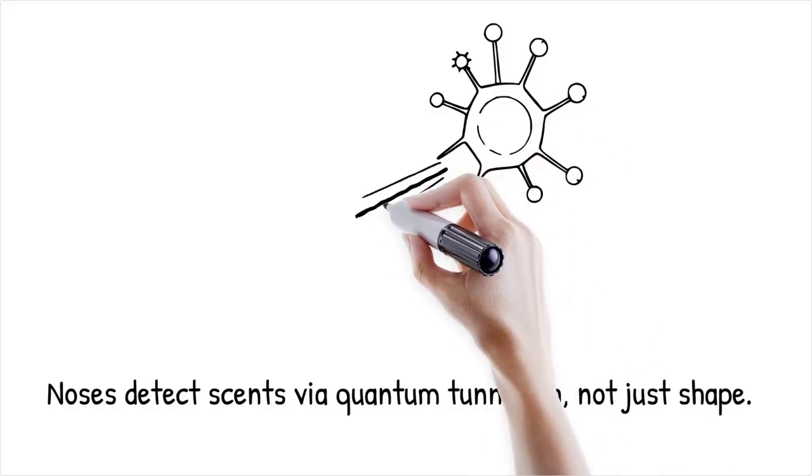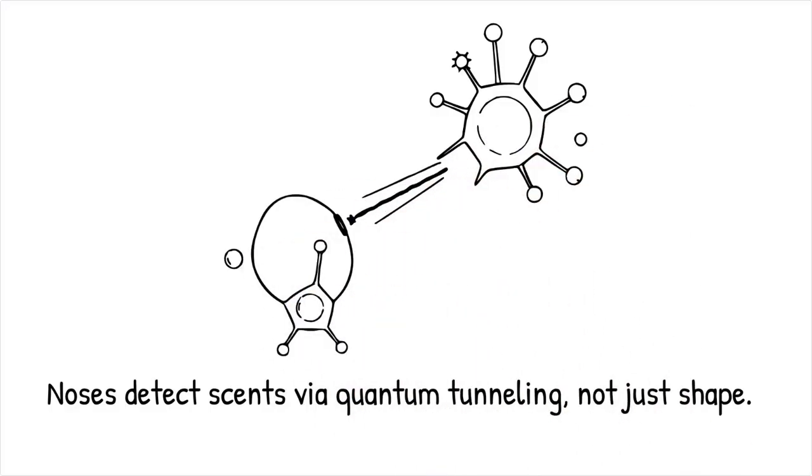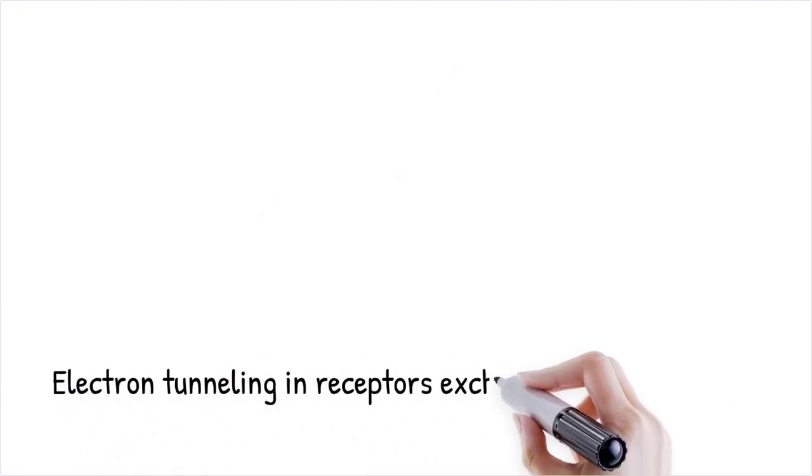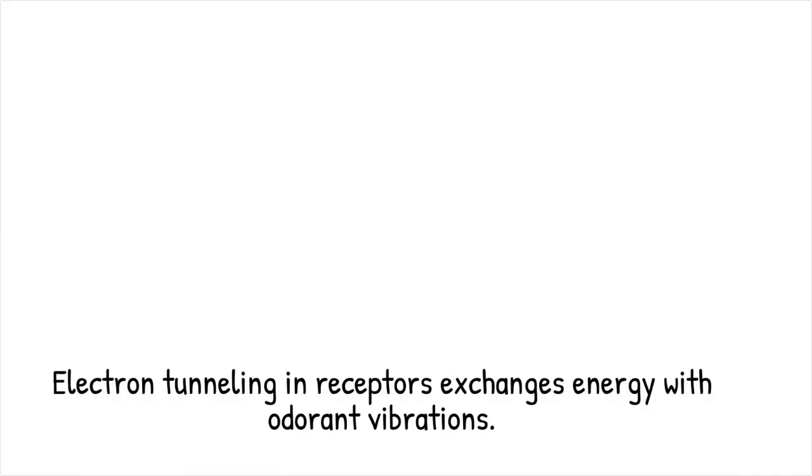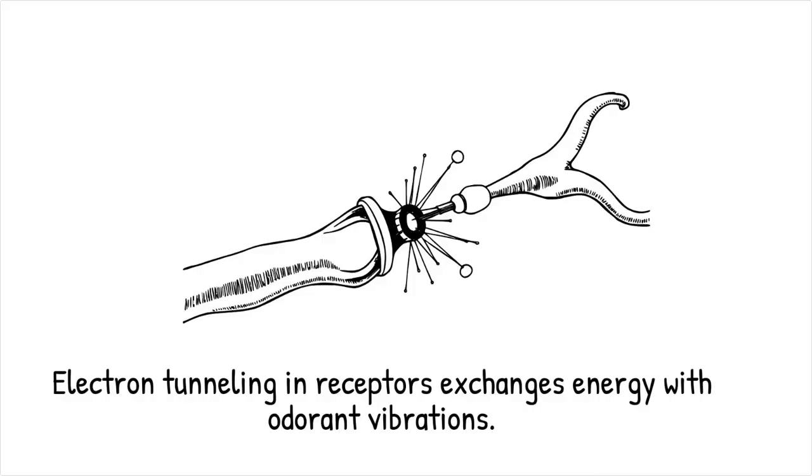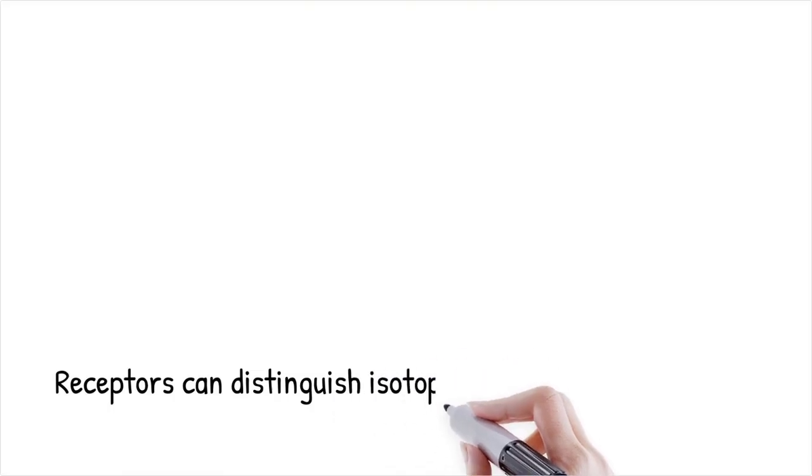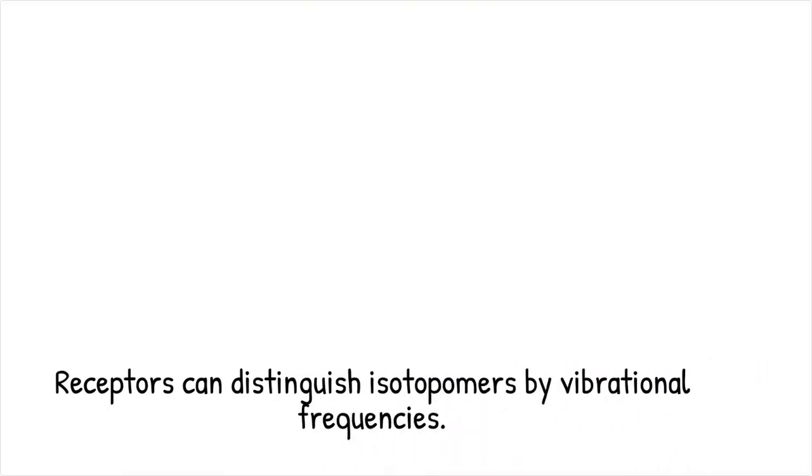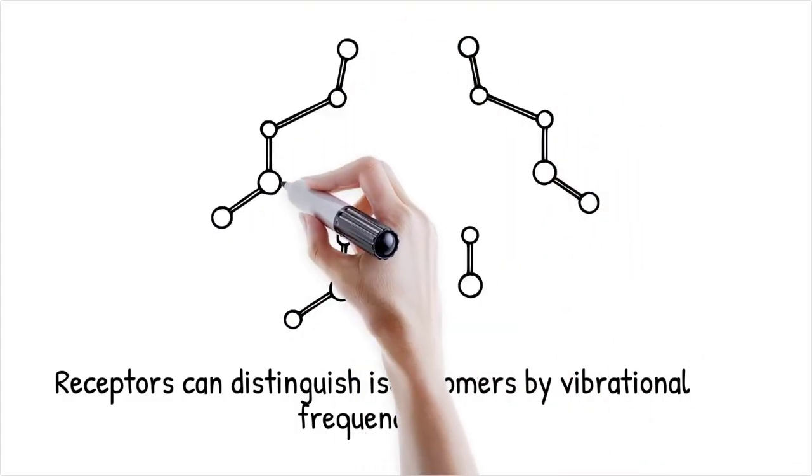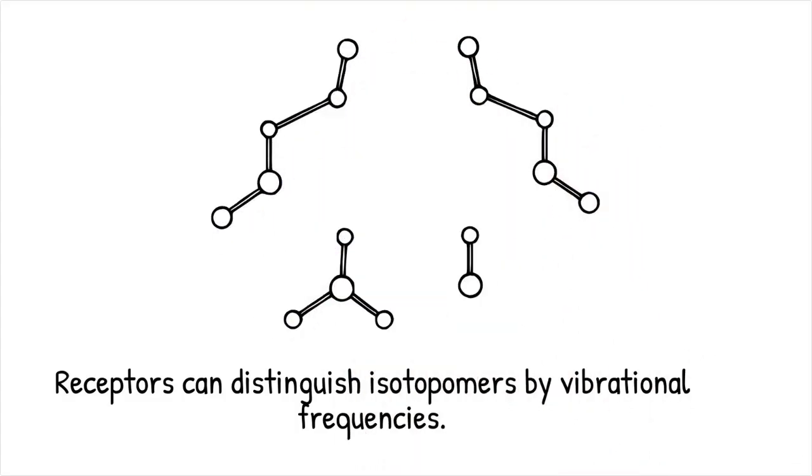The tunneling and smell perception paradox suggests that our noses may detect odorant molecules not merely by their shape but by their vibrational spectra via quantum tunneling. Unlike the classical lock-and-key model, this hypothesis posits that an electron in the olfactory receptor protein tunnels inelastically, exchanging energy with a bound odorant's vibrational mode. This process would allow receptors to distinguish isotopomers, molecules identical in shape but different in atomic mass, solely by their vibrational frequencies. It challenges the assumption that molecular geometry alone governs scent recognition.